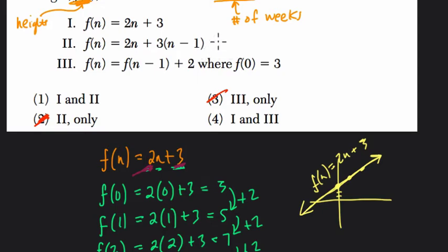So 2, it doesn't work. 2 doesn't work. Well, if we simplify this, f(n) equals 2n plus 3 times n and 3 times negative 1. We distribute that 3. We get 3n, right? And then 3 times not just 1, but negative 1 is minus 3. If we simplify this, we get 5n minus 3. And that's incorrect. This function would say that it grows by 5 inches each week. This is our slope this time. And that's not true, right? It doesn't grow by 5. It grows by 2.